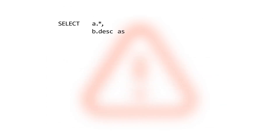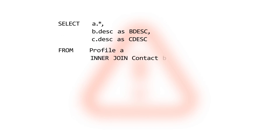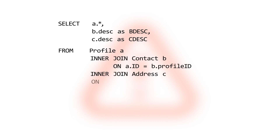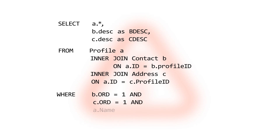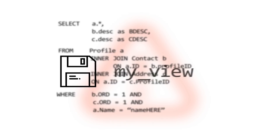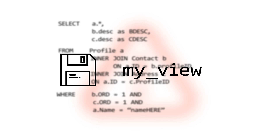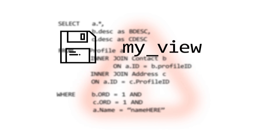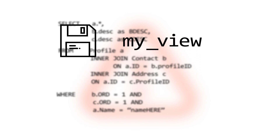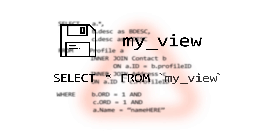In case the query is rather complex — for example, if it contains multiple joins, subqueries, conditions, or a long WHERE clause — please prepare a MySQL View stored query based on it. You can name it MyView. Then, prepare a WPDataTable by querying this view as SELECT everything from MyView, instead of querying the table directly.